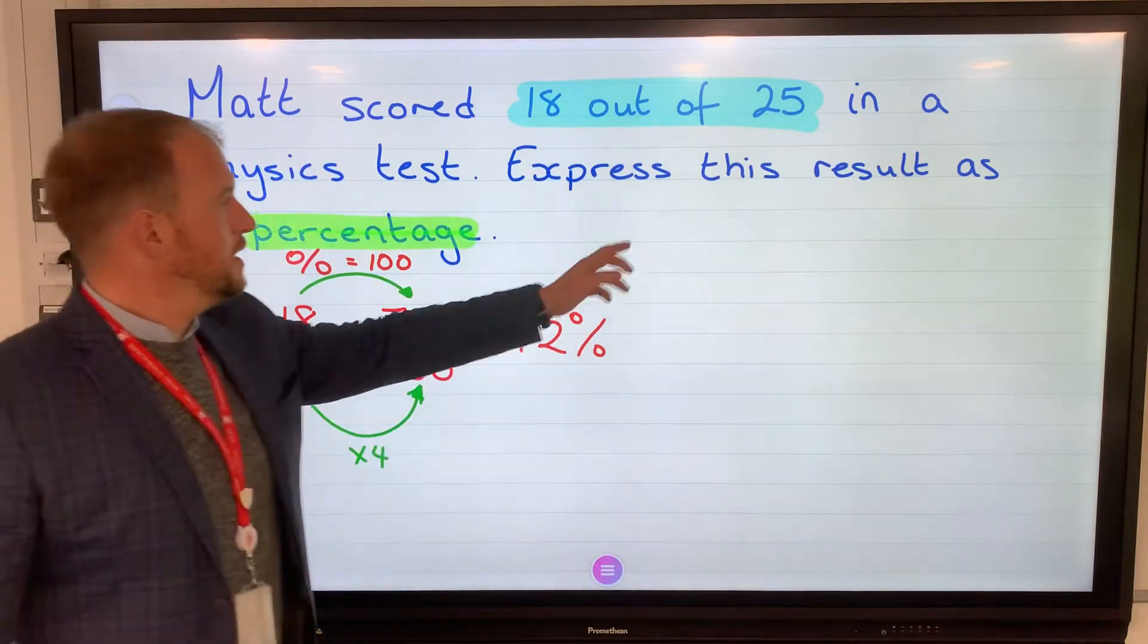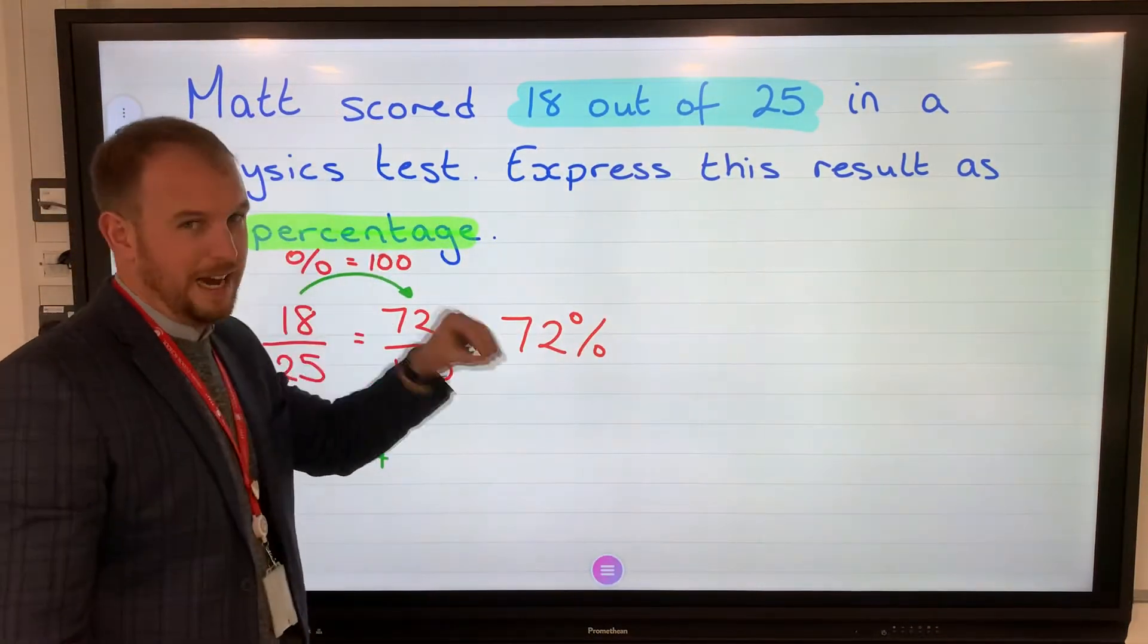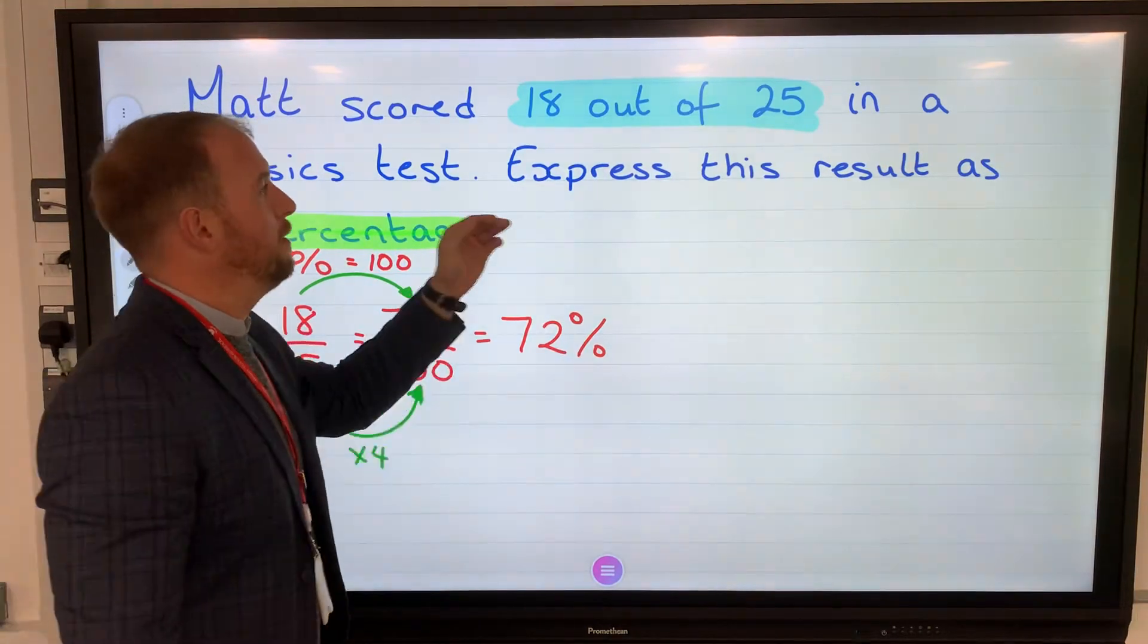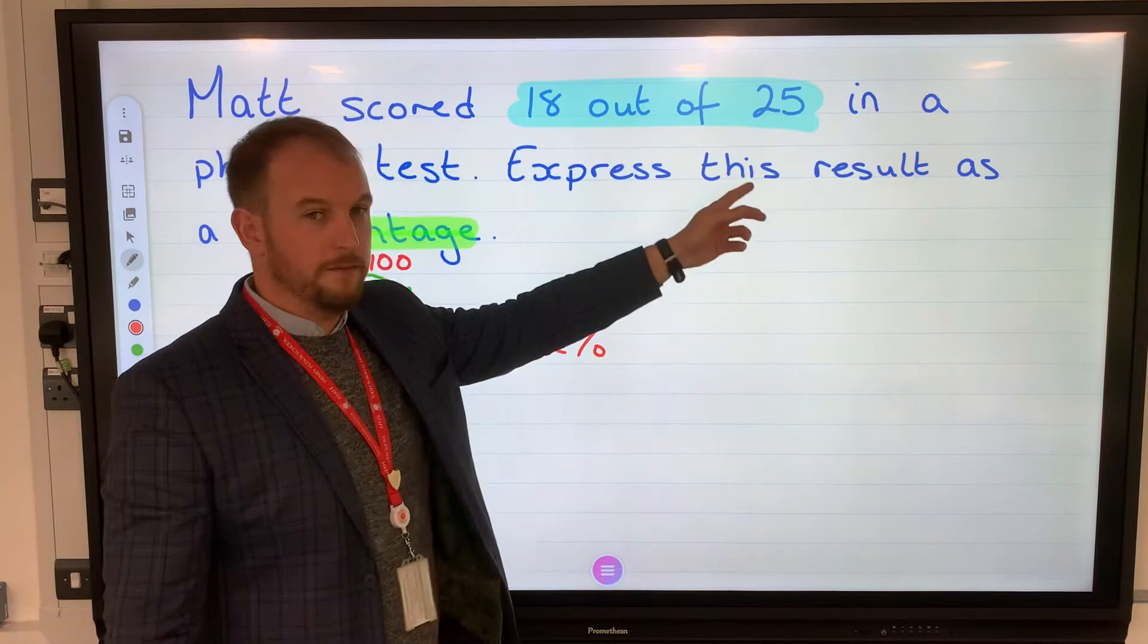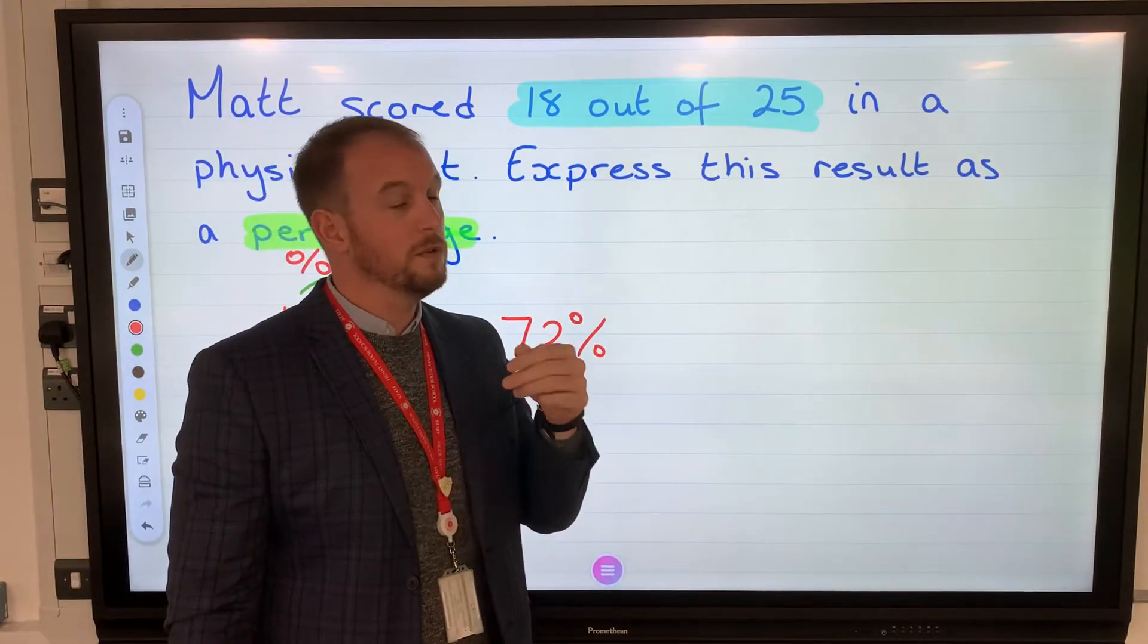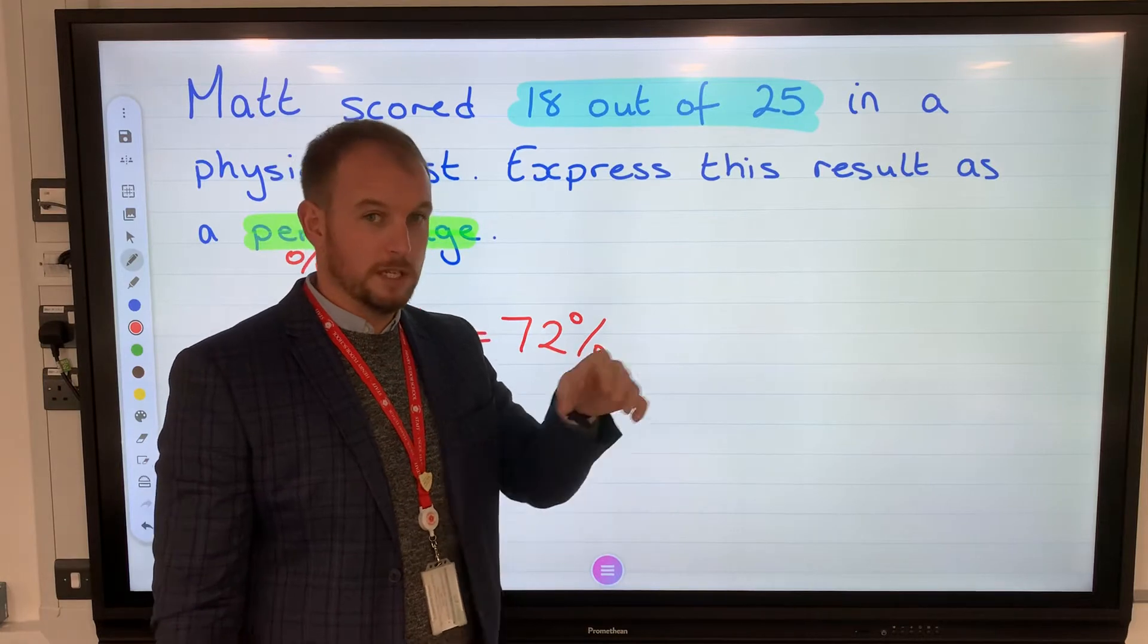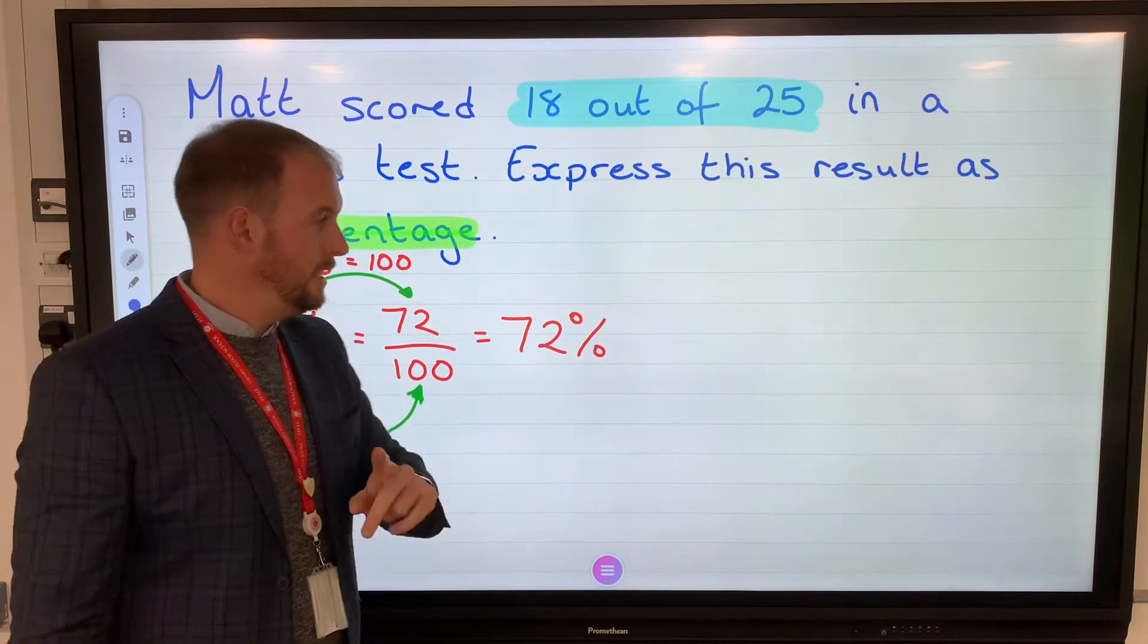So you'll notice this second number with the easier questions are easy factors of 100. If it was out of 50, you just times it by 2. If it was out of 25, you would times it by 4. If it was out of 20, you times it by 5, because 20 goes into 100 five times. So if they're basic factors, it's very easy.